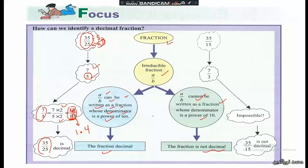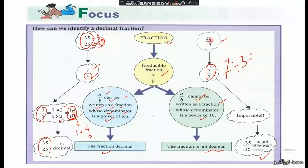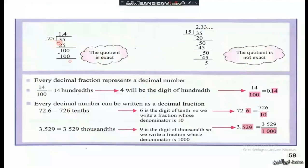In another example, we have three in the denominator. Three cannot be written as a power of ten, so seven over three is not a decimal fraction. The quotient of seven divided by three is two point three three three three... and it never ends — it is not exact. So thirty-five divided by fifteen gives a non-terminating quotient.